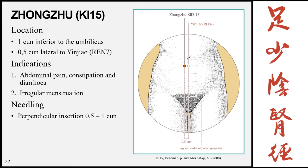Zhongzhu, Kidney 15, is located 1 cun inferior to the umbilicus, 0.5 cun lateral to Yinjiao (Ren 7) or the midline. Indications: abdominal pain, constipation, diarrhea, and irregular menstruation. Needling: perpendicular 0.5 to 1 cun.